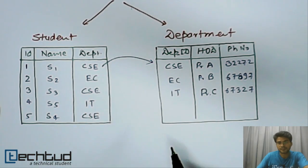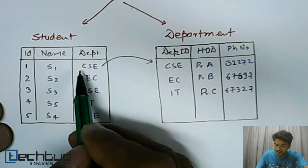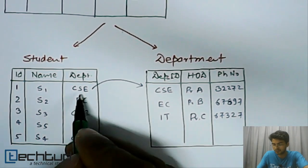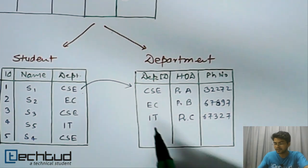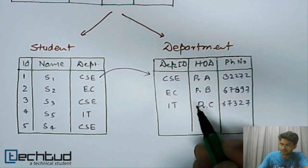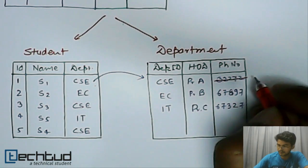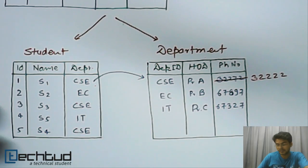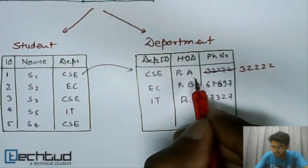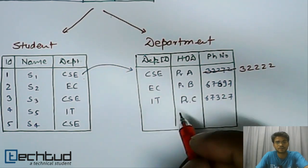In the Student table we keep the student's department ID as a foreign key, which refers to the Department table. Whenever we need department details, we refer to the Department table. Redundancy is now minimized — we store the department's HOD and phone number only once. For an update, we just go to the Department table and change it in one place. Deletion and storage are similarly handled at a single place.